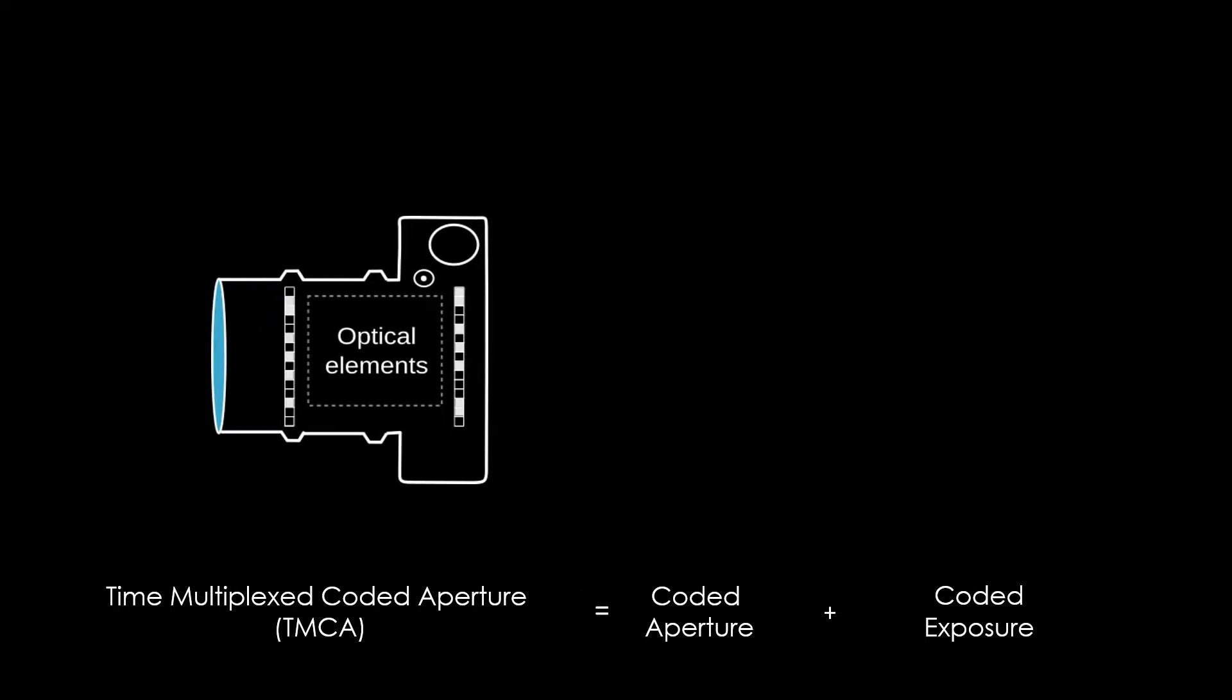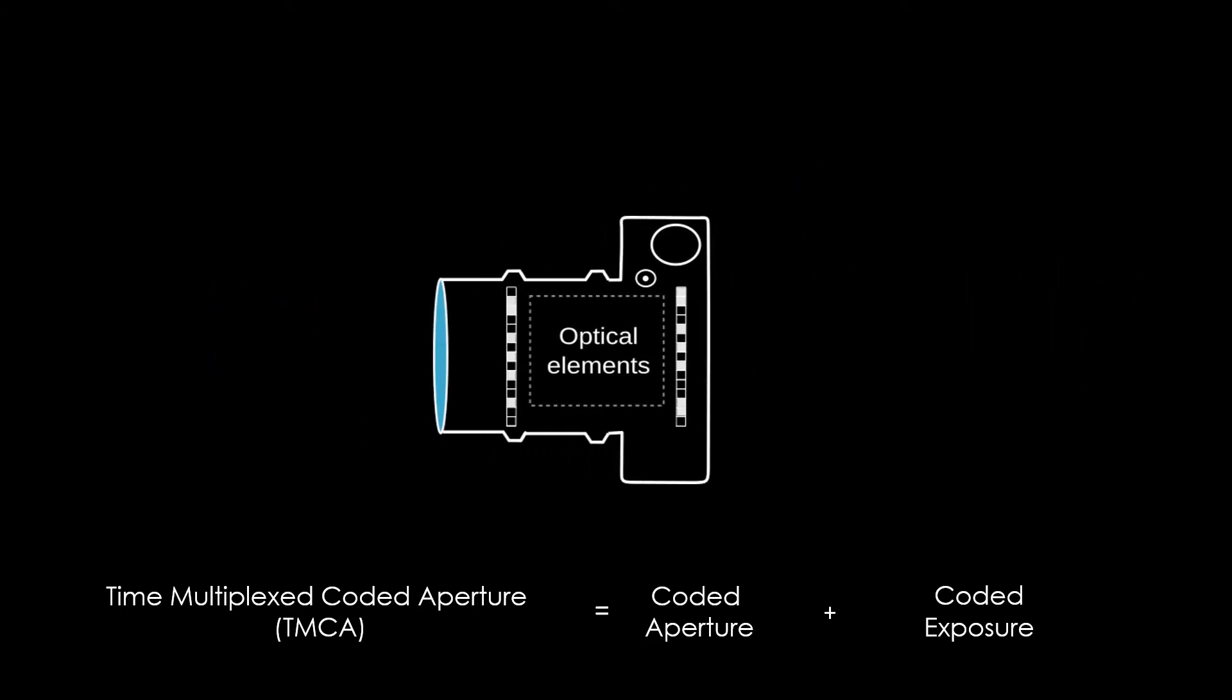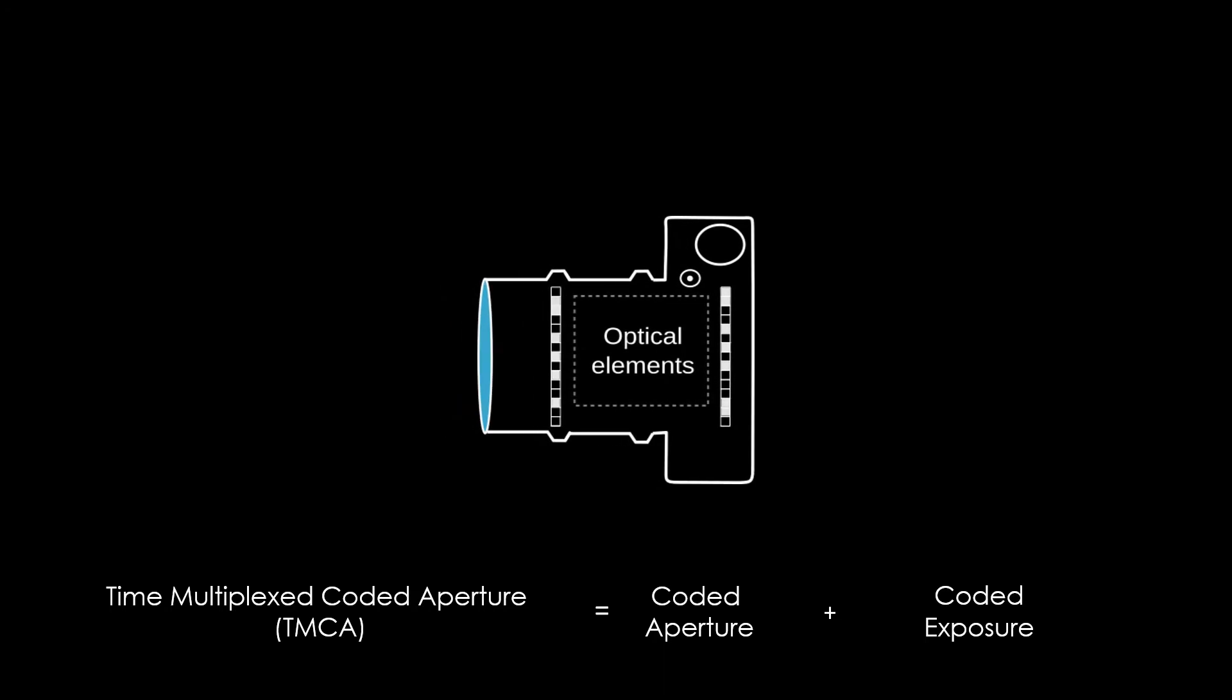Coded exposures consist in modulating the shutter of the camera at each pixel during the exposure. Instead of switching the pixel on during the whole time of the exposure, we program it to be switched off during certain time slots. When it is off, a pixel does not integrate light. In our proposed time-multiplexed coded aperture, we thus vary the coded apertures as well as the coded exposures in time, simultaneously. They are synchronized. At the start of a slot of the coded exposure, we flash a new coded aperture to the digital light processor.